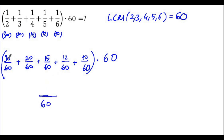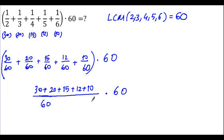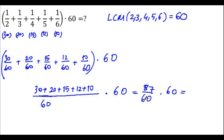I'm going to add the numerators: 30 plus 20 plus 15 plus 12 plus 10. That gives 87 over 60, and we multiply by 60. The 60s cancel, so we get 87. That's our answer.